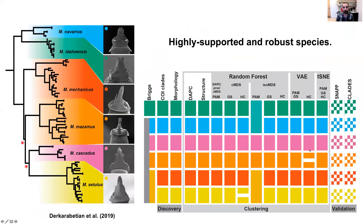To sum up this first study: species delimitation in Metanonychus was straightforward. There was high congruence across data types and analysis types, including essentially all of the unsupervised machine learning approaches. As expected, genetic-based validation approaches over-split. I have 100% confidence in the delimited species, and that's going to become important later.